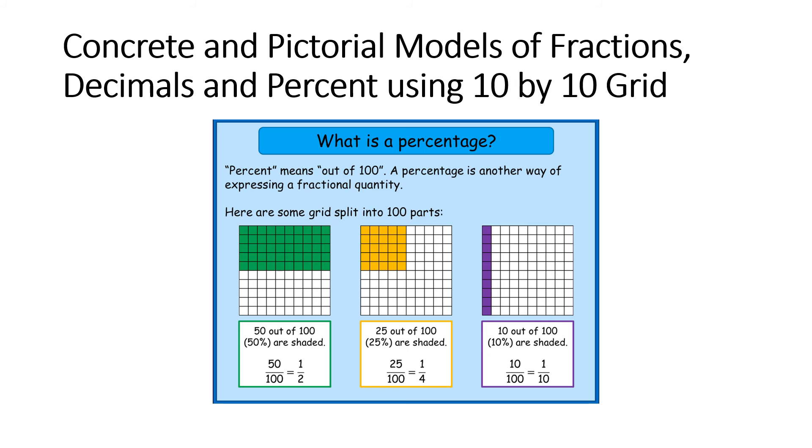Now when we look at concrete pictorials and models using a 10 by 10 grid, we have to remember that percent means out of 100. A percentage is another way of expressing a fractional quantity. Here are some grids split into 100 parts. If we notice that we have half of a grid shaded in, this represents 50 out of 100. 50 percent are shaded. This is one-half.